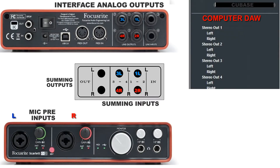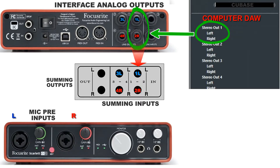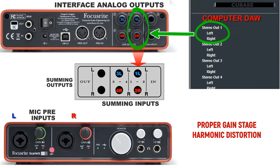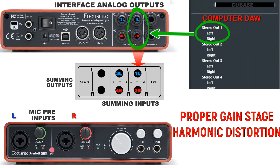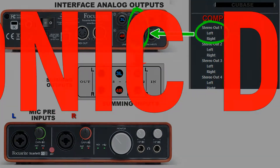Basic, simple routing: route the outgoing tracks from your computer to the corresponding outputs on the DAW interface, then send to the summing mixer for analog summing. Pay attention to proper gain staging from the DAW to hit harmonic distortion in the